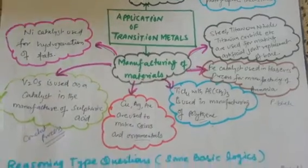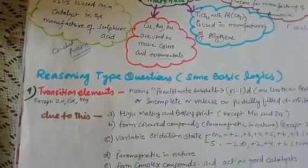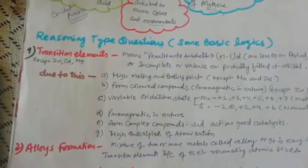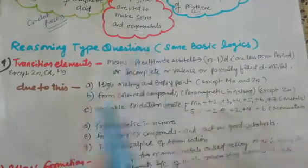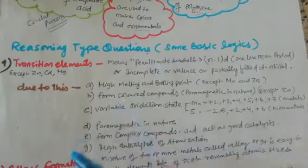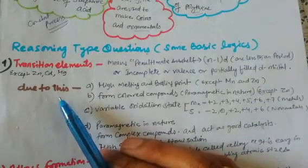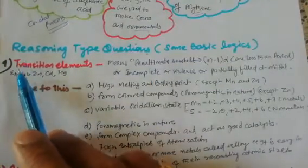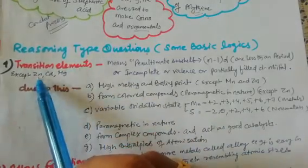Now we come to the most important part: reasoning-type questions. There are many such questions in this unit. I have prepared some general common logical answers so you can answer even if you haven't fully studied. The first logic: transition elements are d-block elements, but except zinc, cadmium, and mercury — all metals are known as transition metals.